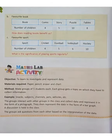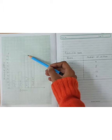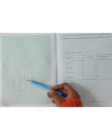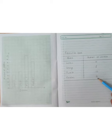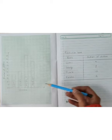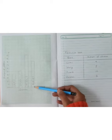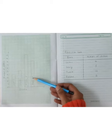For story, we have 5 children, so we draw a bar up to 5 and write story. For puzzle, we have 10 children, so we draw a bar up to 10 and write puzzle. For fables, we have 8 children, so we draw a bar up to 8 and write fables.